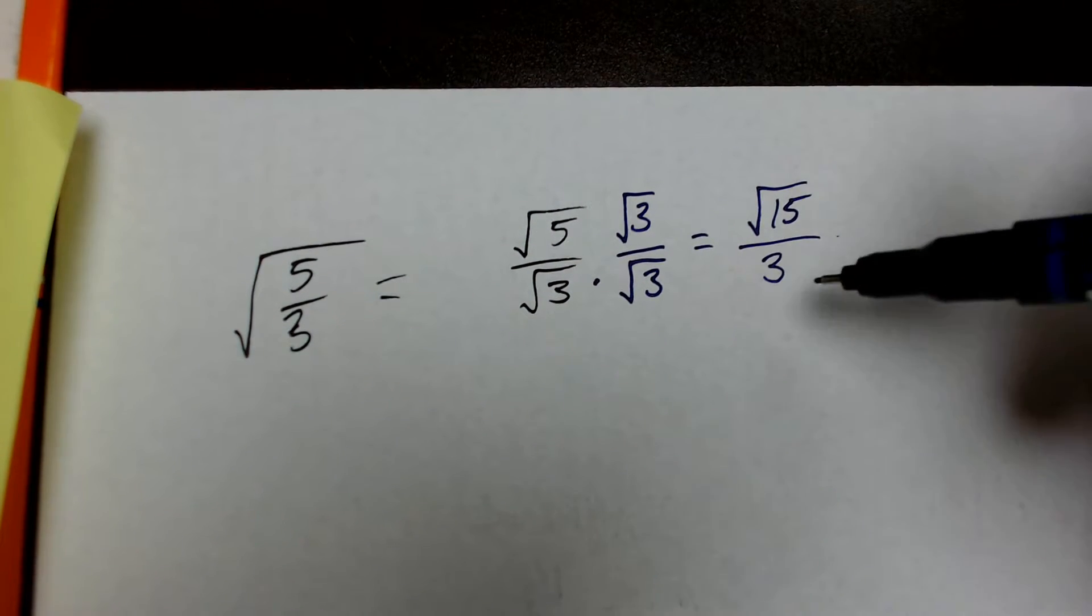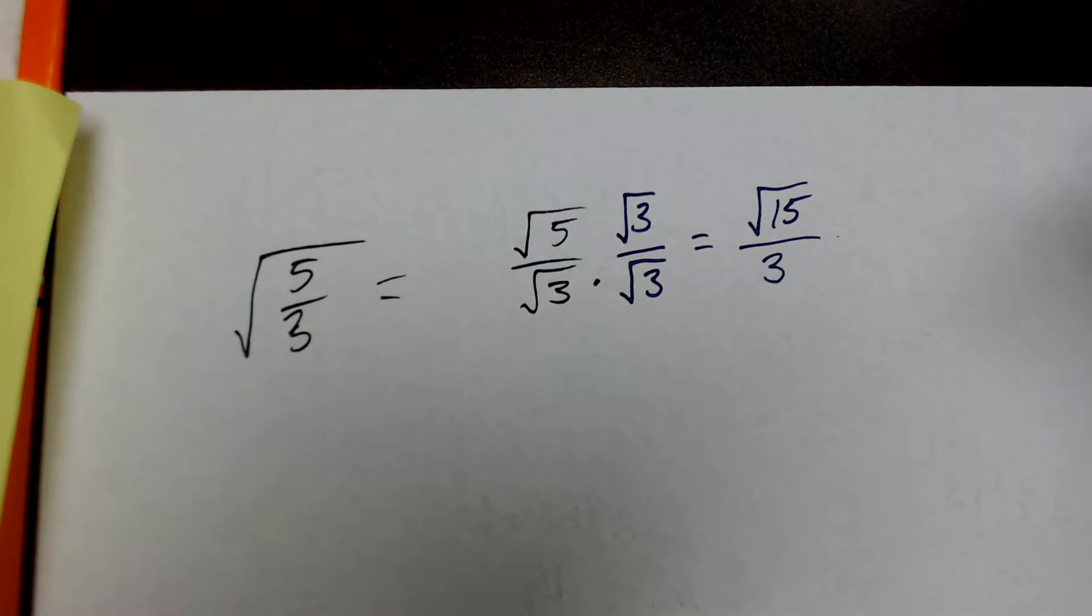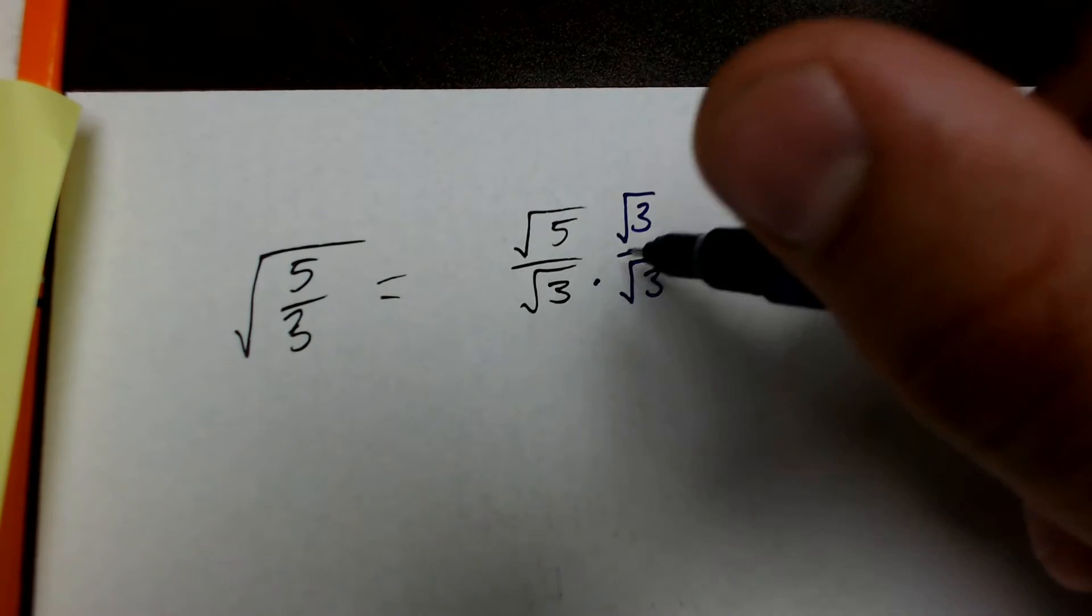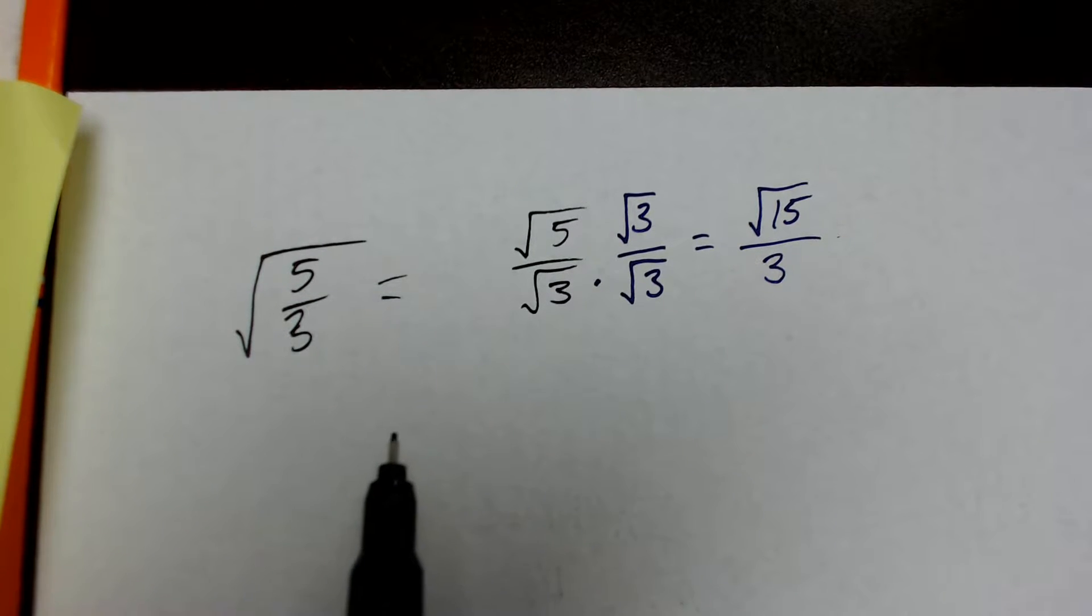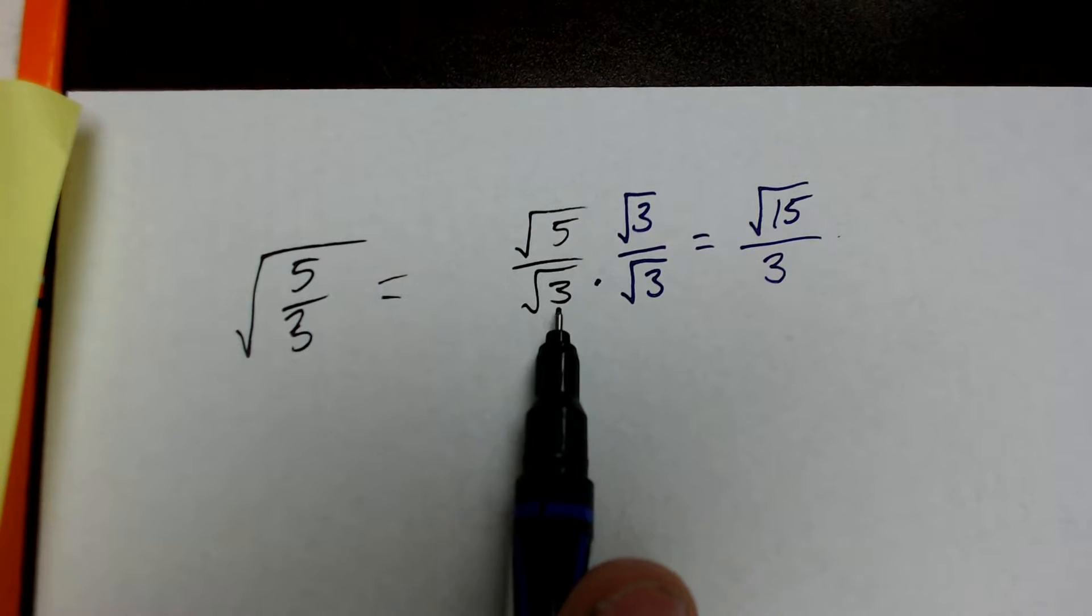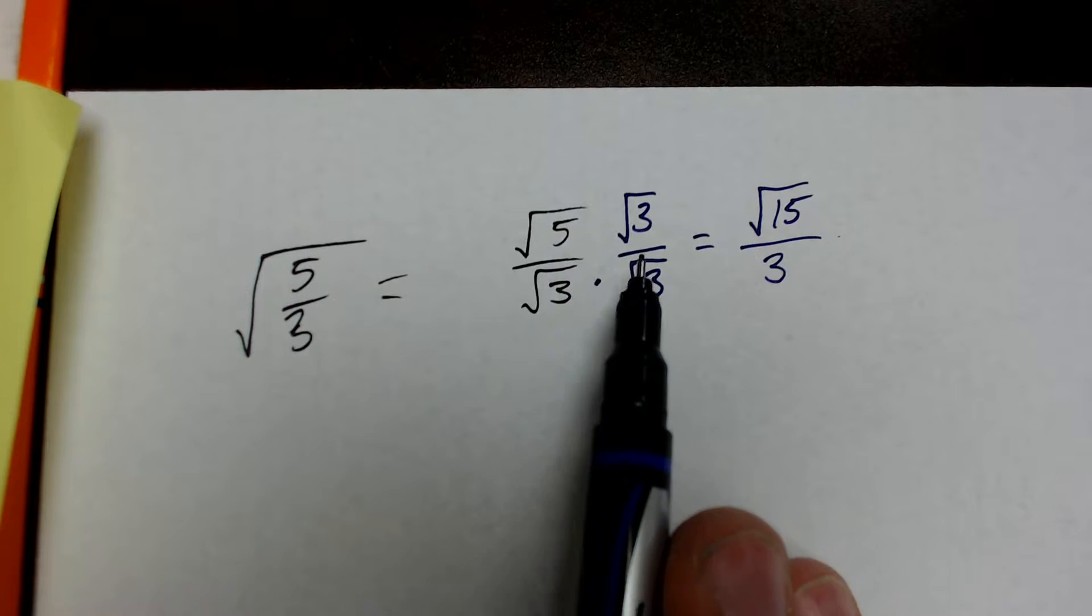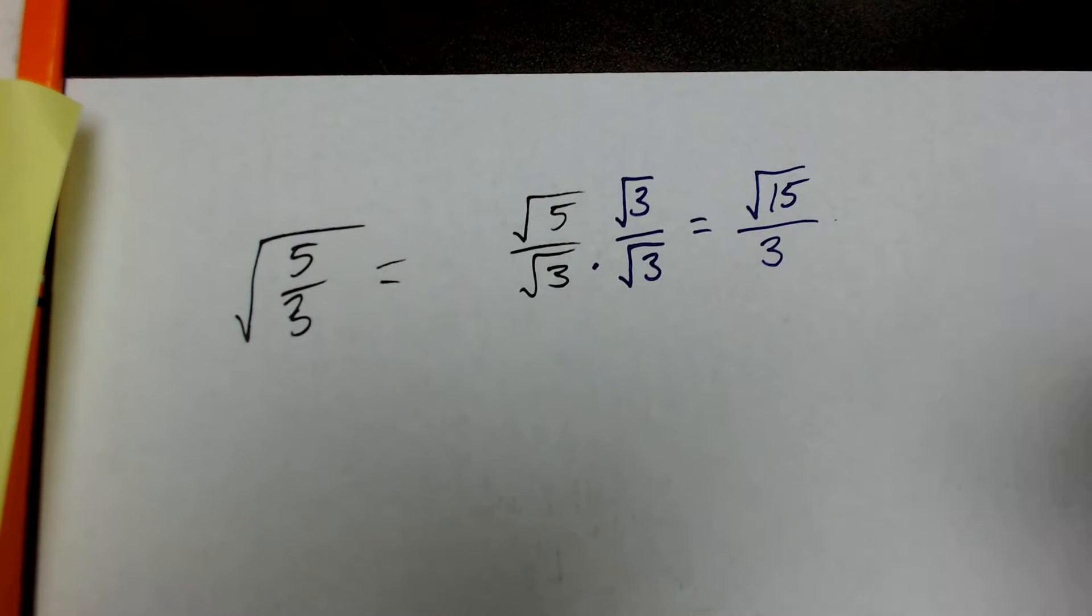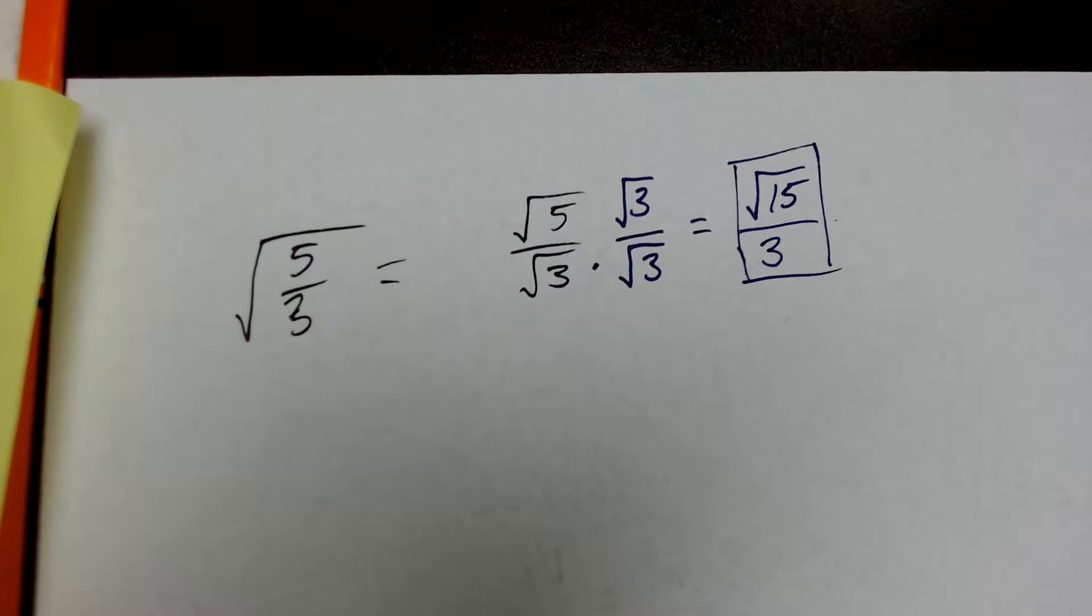Alright, now by doing this, what I've done is I've rationalized the denominator. I now have a whole number instead of an irrational number, and I have not changed the number at all because I multiplied by 1. All I did was rewrite the number, and this is considered a simpler form. So, when you're asked to simplify, what you have to do is separate the numerator from the denominator, and then multiply by a value of 1 represented with the denominator's number. So, root 15 over 3 would be our final answer for this problem. And, I'll go ahead and do a couple more examples because these can get a little more complex.